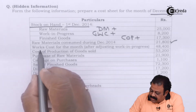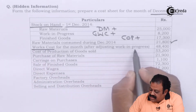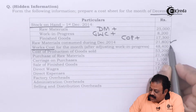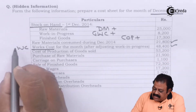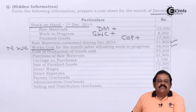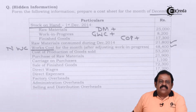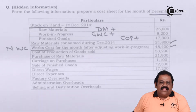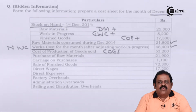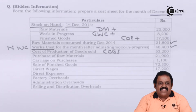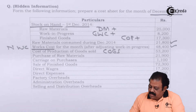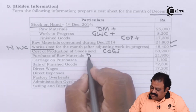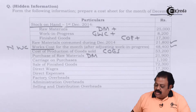Works cost for the month after adjusting work in progress is given as 48,400 — information of net works cost is given, which is usually not given in the question. This also shows that we are required to find out some balancing information. Cost of goods sold is also given, which is usually not given in the question. That also suggests we are required to find out some information which is usually given but not given in this question: purchase of raw materials, direct material carriage on purchases.